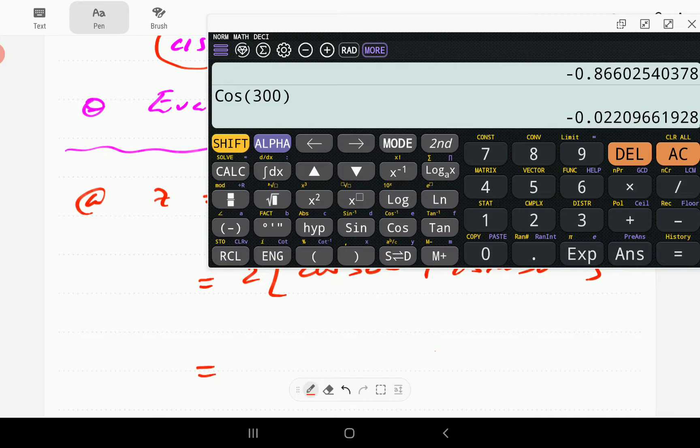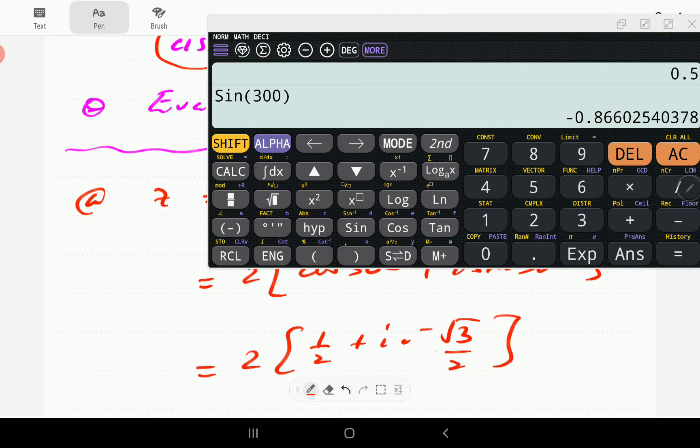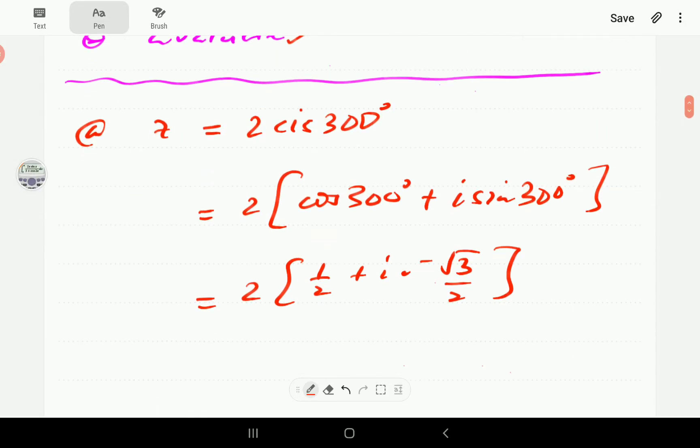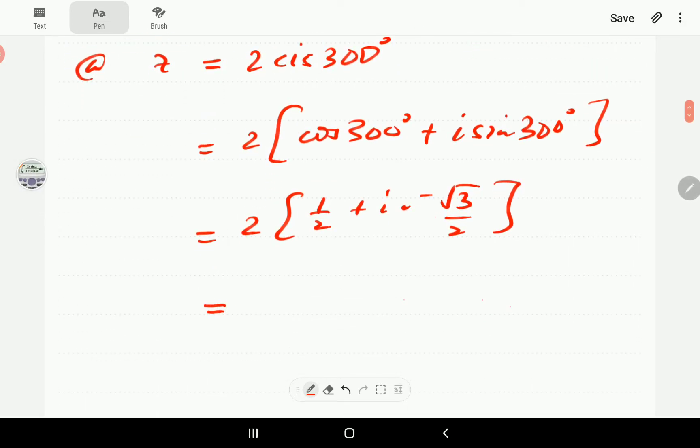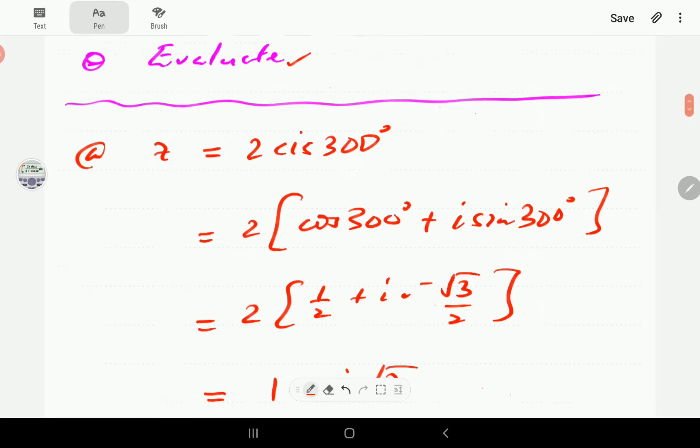First we make sure our calculator is in the degree mode. Cosine 300 is equal to one half, so one half there. Then I'm going to work out sine 300, and that one is negative root three over two, since 300 is a special angle, so the trigonometric values of it can be found exactly.